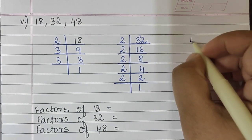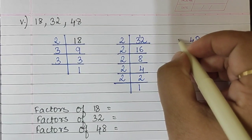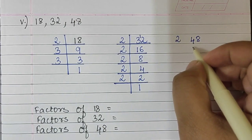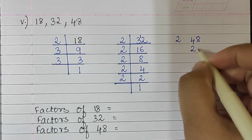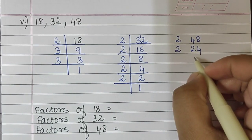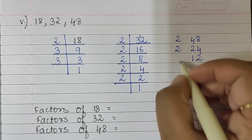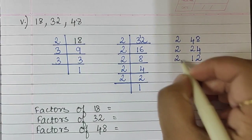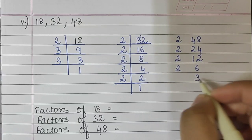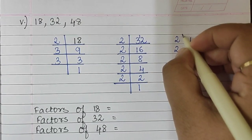The next number is 48. We will begin with 2. 2 twenty-fours are 48, 2 twelves are 24, 2 sixes are 12, 2 threes are 6, and 3 ones are 3.